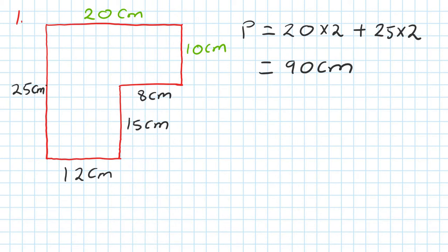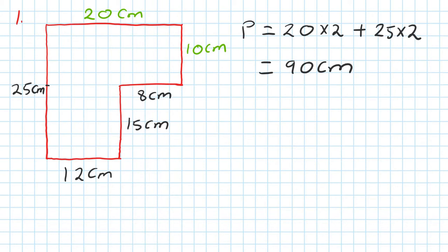Or you can cut like this and name this area one and area two. You find area one by 20 times 10, and area two is 15 times 12. There are many ways to do it. I'm going to do the third one - I find the larger rectangle and minus the part that's not included.